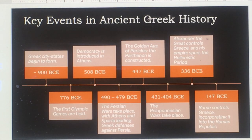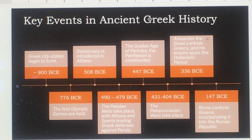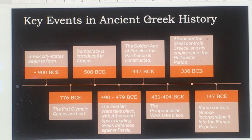Here's a brief timeline of key events. Around 900 BCE, city-states begin to form. In 776, we have the first Olympic Games. In 508, democracy is introduced in Athens. From 490 to 479 BCE, we have the Persian Wars, with Athens and Sparta leading Greek defenses against Persia.